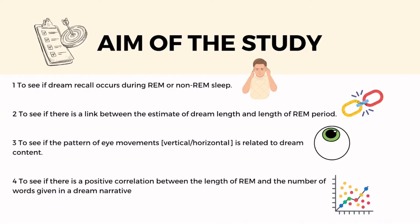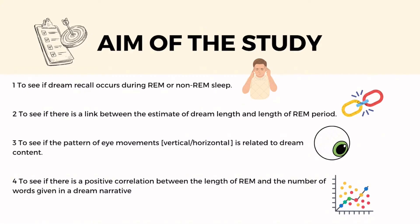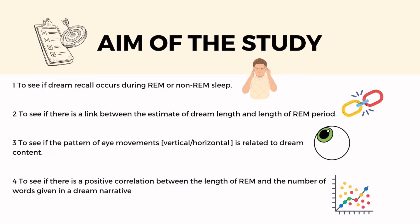There were four aims of the study. First, Dement and Claytman wanted to see whether a person remembers their dream in the REM stage or the non-REM stage. Second, they wanted to see if there is a link between the length of the dream and the length of the REM period. Third, they wanted to see whether the vertical or horizontal pattern of eye movement is related to what the person is dreaming about. Lastly, they wanted to check if there is a positive correlation between the length of REM and the number of words in a dream narrative.